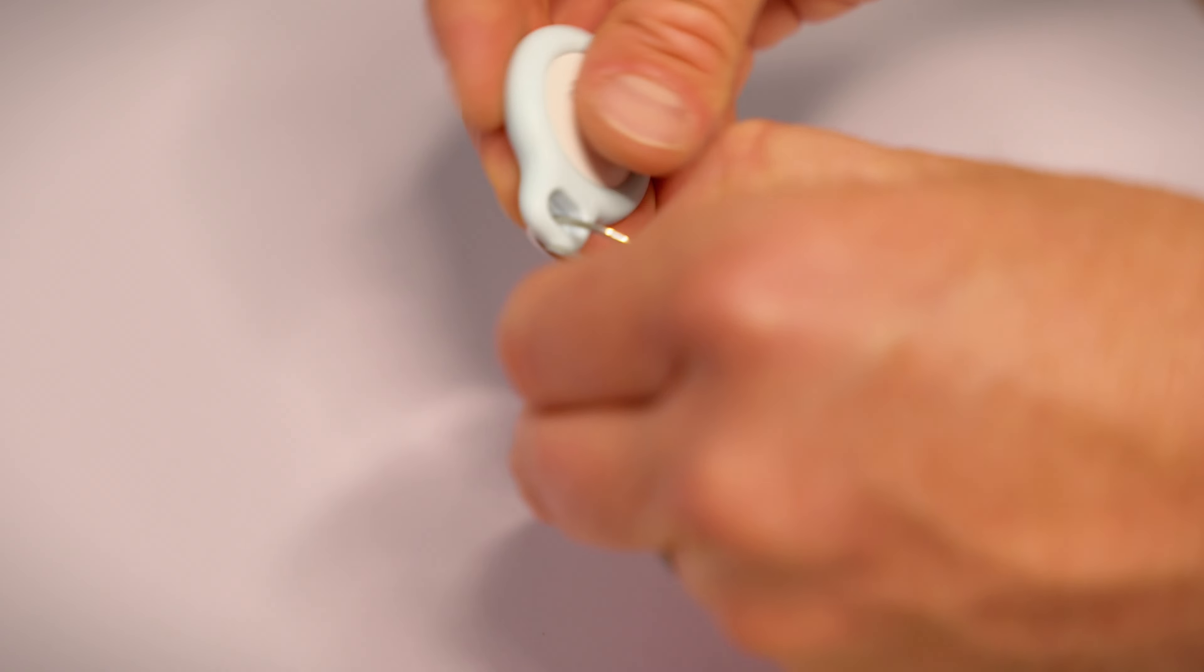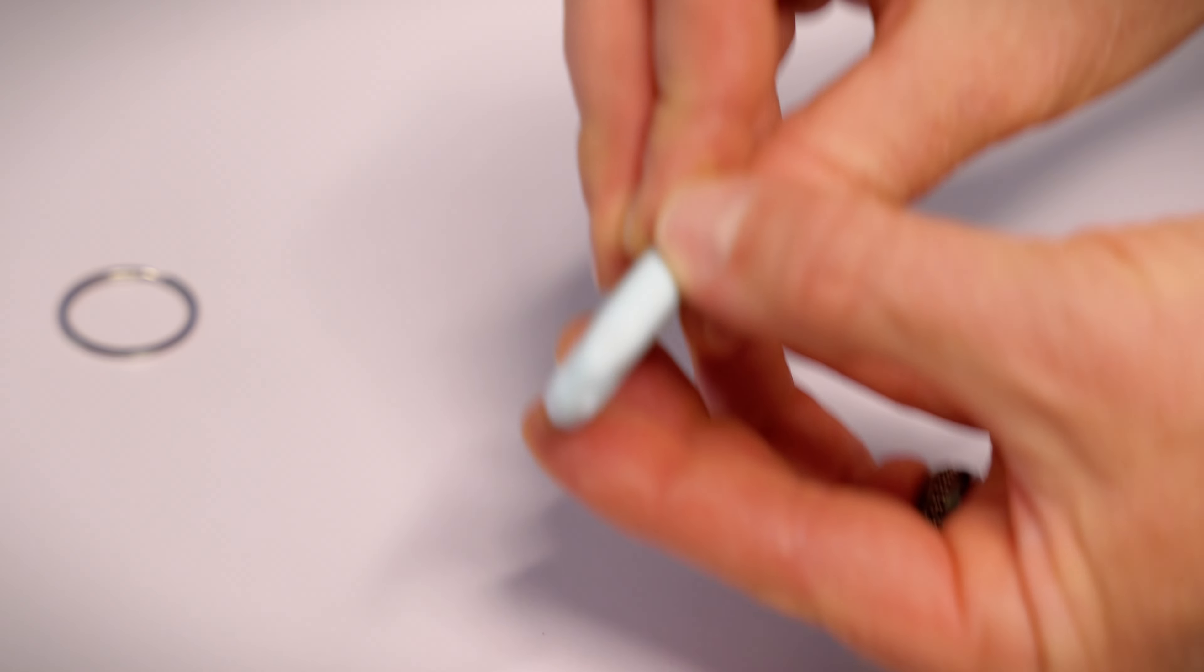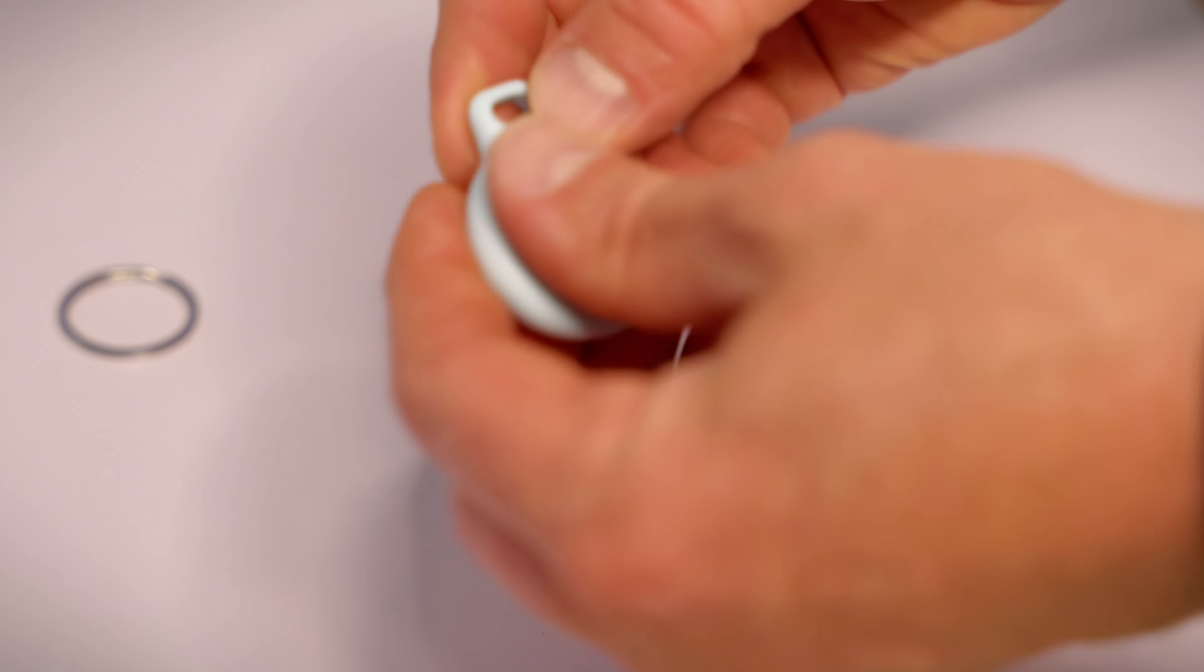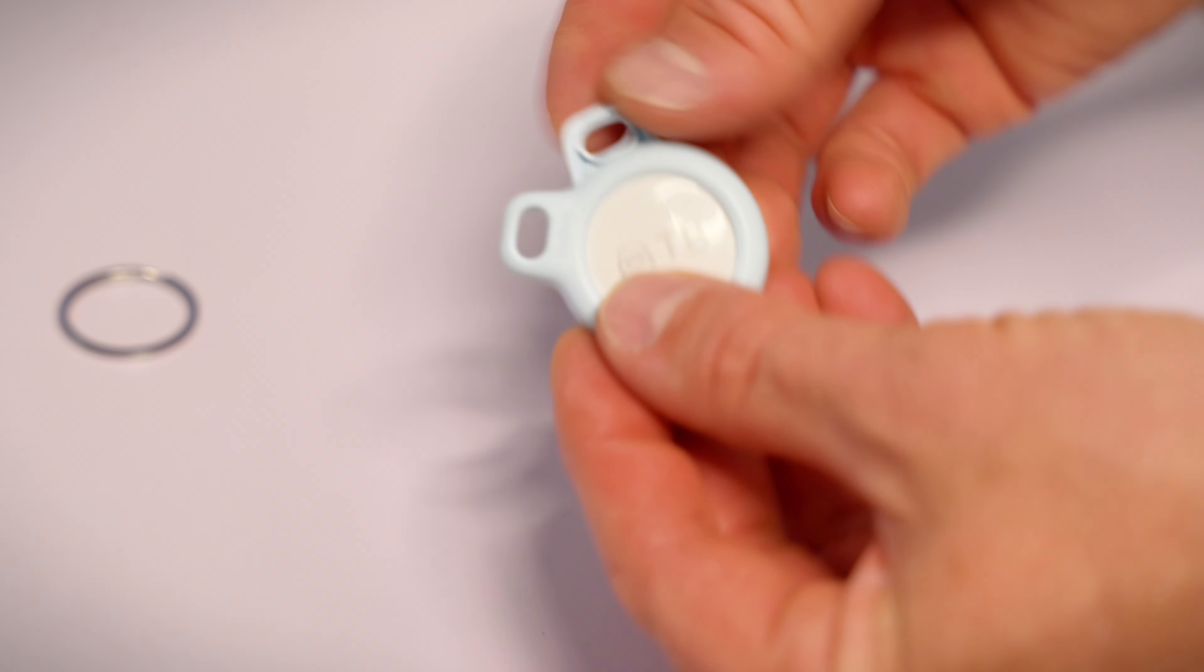We'll start by removing the key ring from the decorative cover. We have it in the case. We just need to turn the case to the left, counterclockwise, pop the top off.